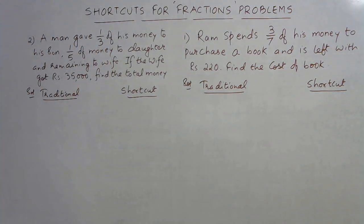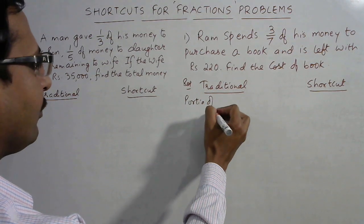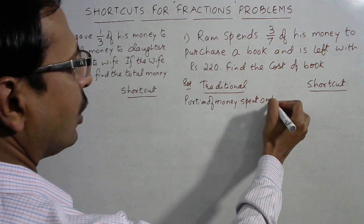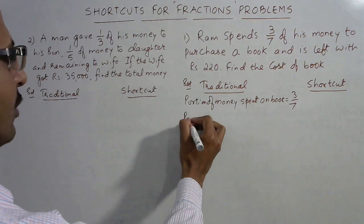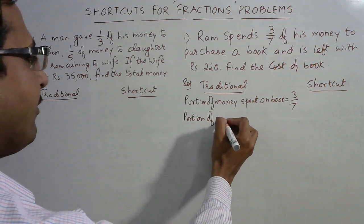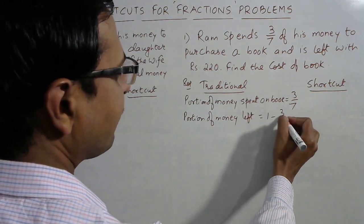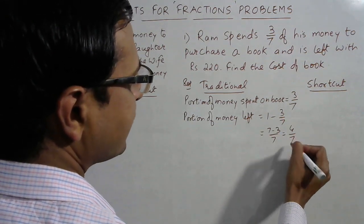Let's see the traditional method first. When solving using the traditional approach, first we need to find the portion of money left with him. Portion of money spent on the book is 3/7 — this is given. Portion of money left: we subtract 3/7 from 1, which gives (7 − 3)/7 = 4/7.